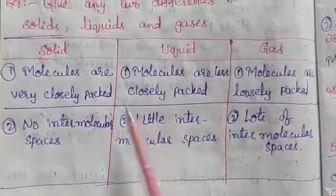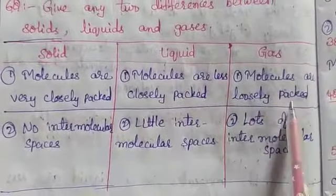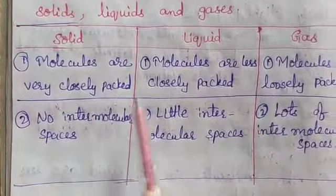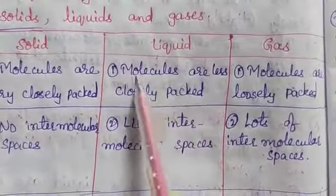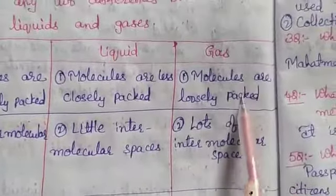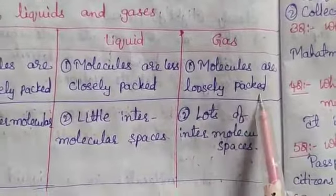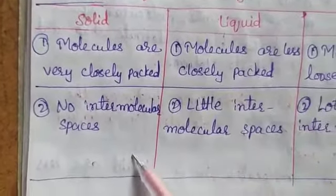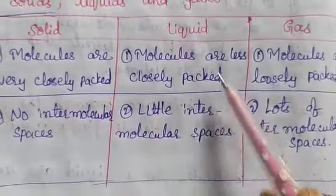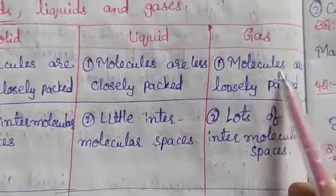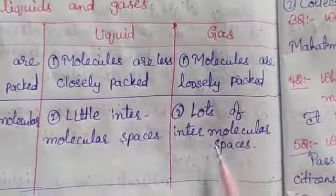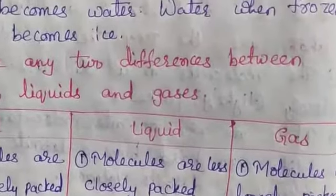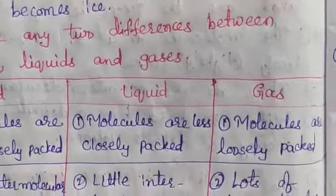Give any two differences between solids, liquids and gases — make a table. First point: molecules are very closely packed in solids; molecules are less closely packed in liquids; molecules are loosely packed in gases. Second point: no intermolecular spaces in solids; little intermolecular spaces in liquids; lots of intermolecular spaces in gases. This is our 19th lesson. Once go through the lesson reading and complete the notes.